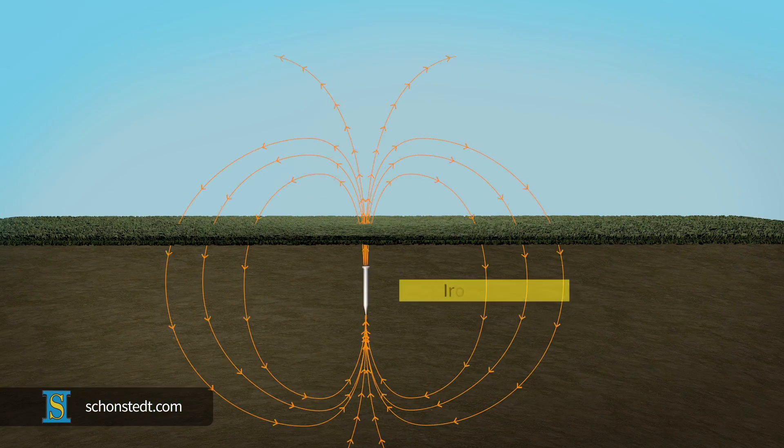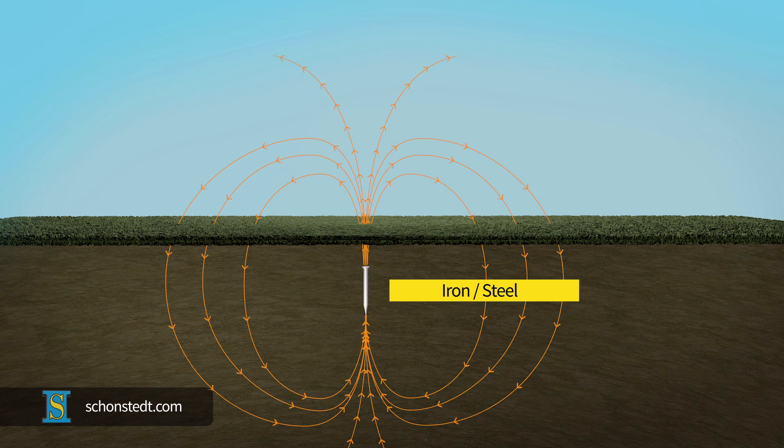Objects made of certain materials, such as iron and steel, are affected by this field in such a way that they develop their own magnetic field, very similar to that of a magnet.